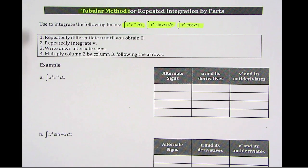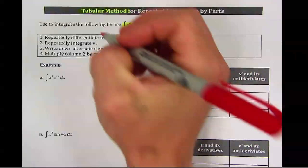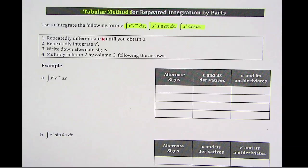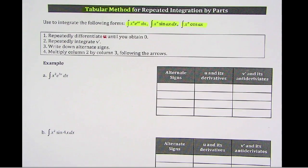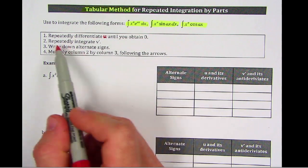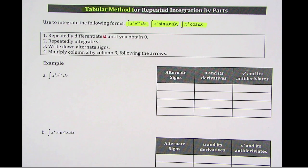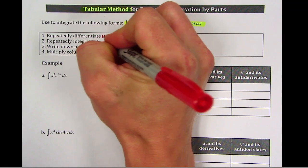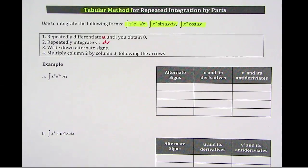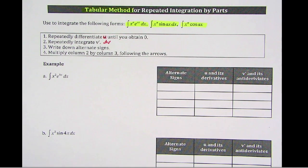So I changed this order around a little bit. The book starts with writing down alternate signs, but if you don't know how many rows you need, that really doesn't help me. So what we're going to do is repeatedly differentiate u until you obtain 0. And you still have to find u. Then it says repeatedly integrate v prime, and v prime is also what we know as dv. Then you write down the alternate signs, and then you're going to multiply column 2 by column 3 following the arrows.